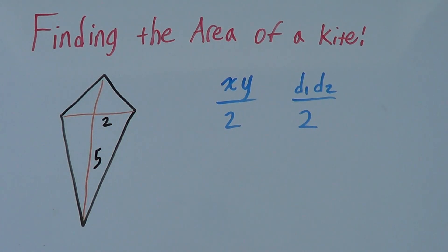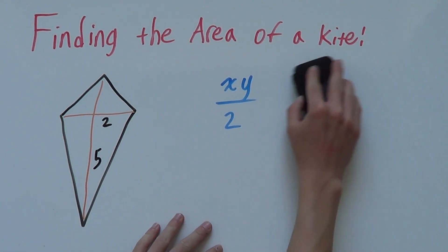So, diagonal 1 and diagonal 2 over 2. Doesn't matter which way you write it, they do the same thing.